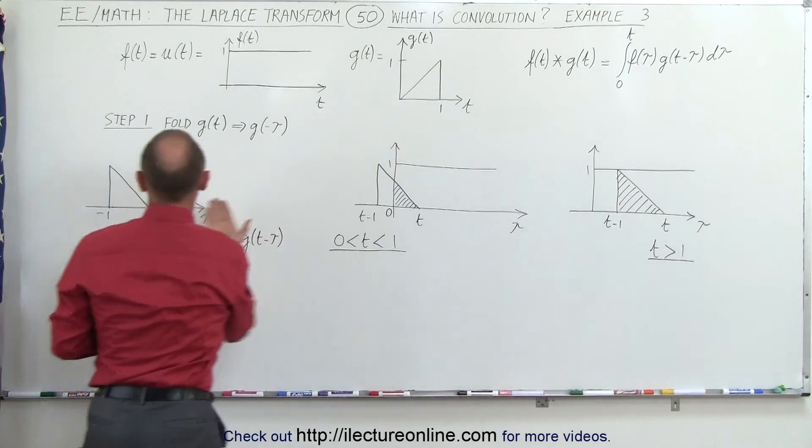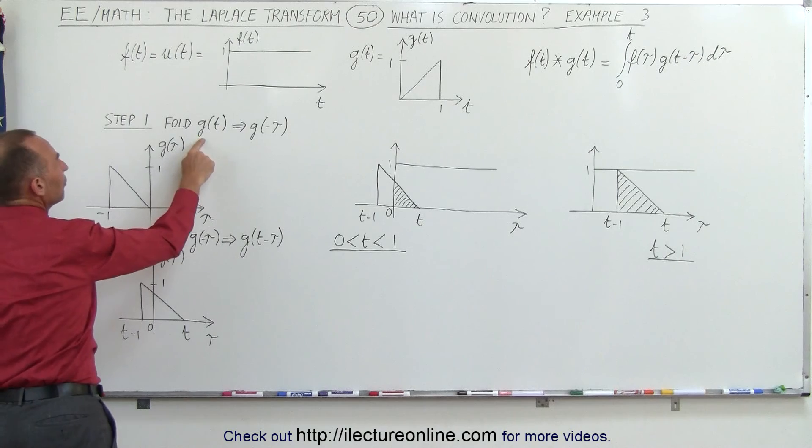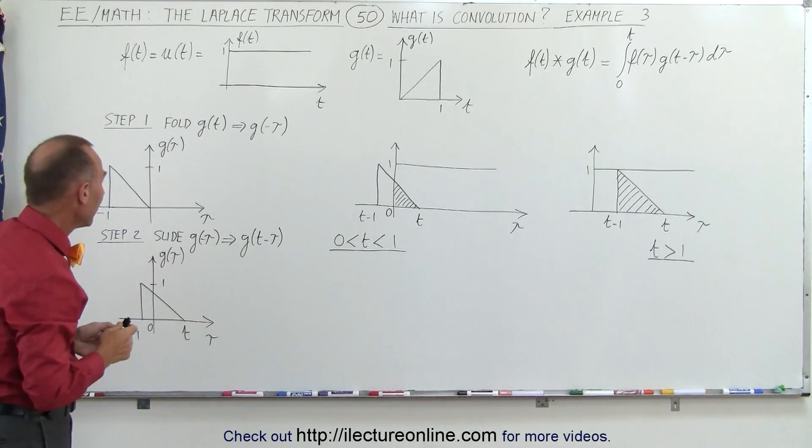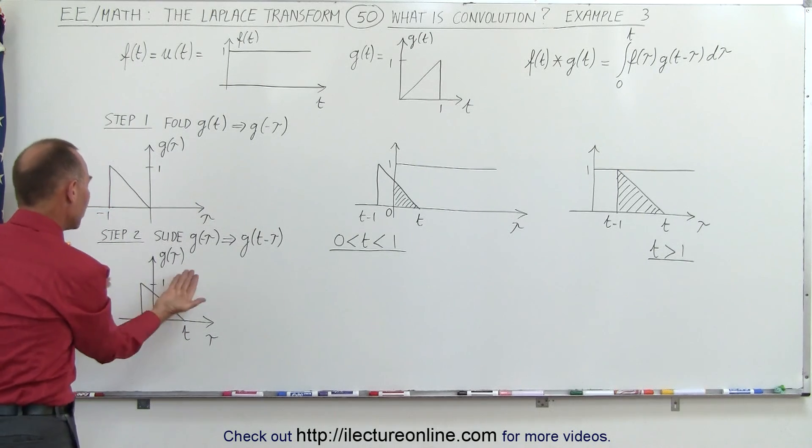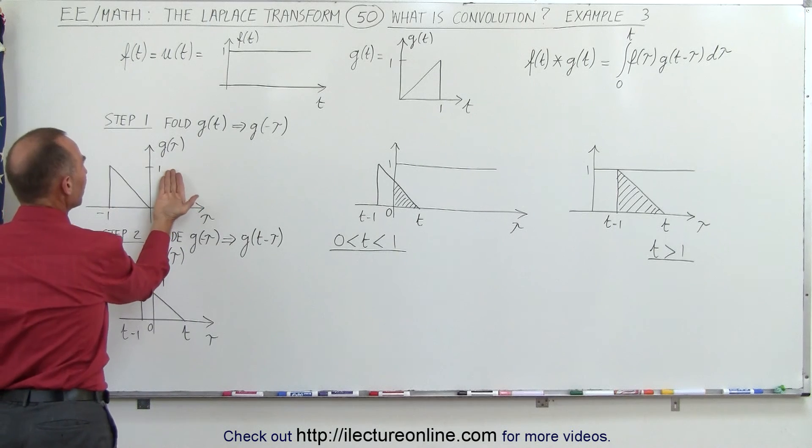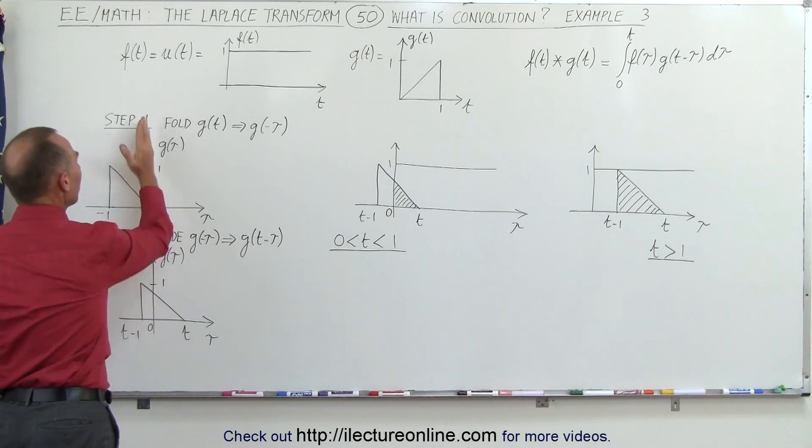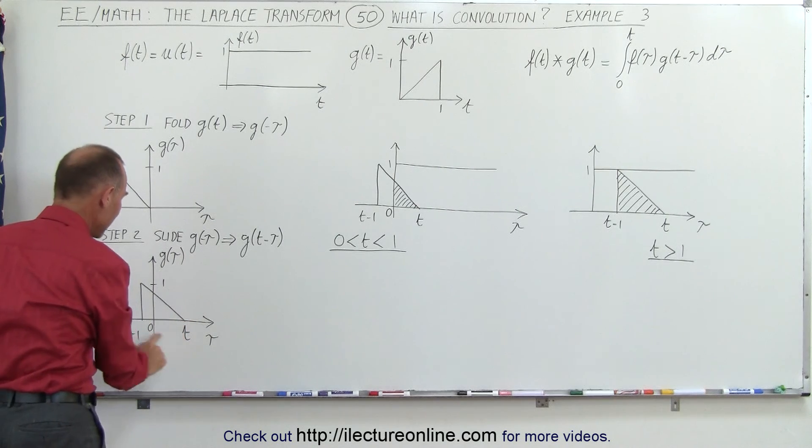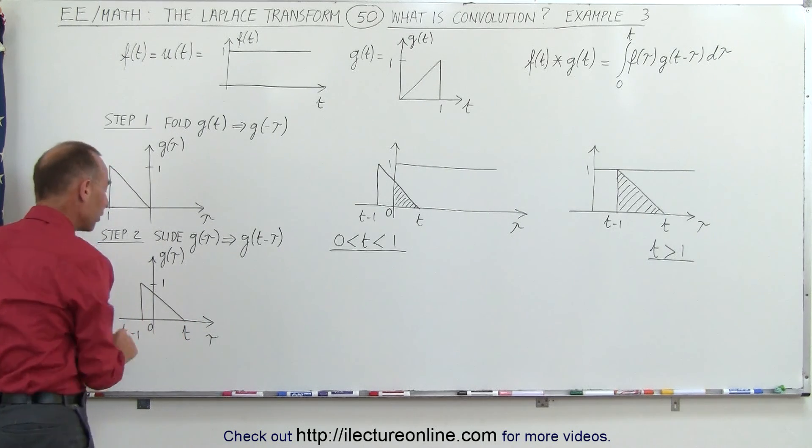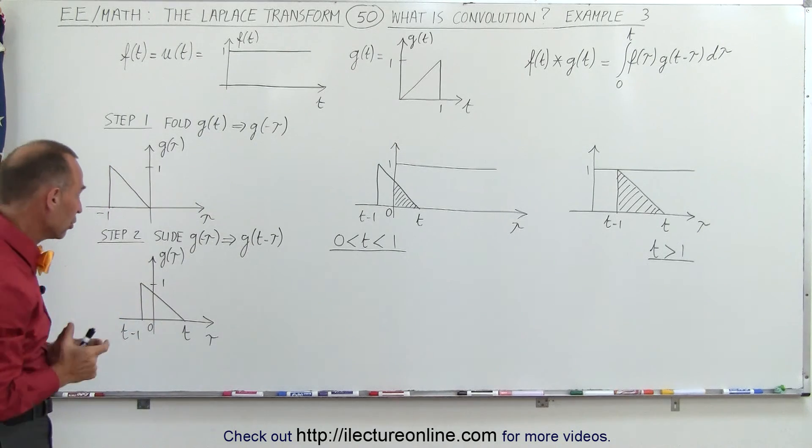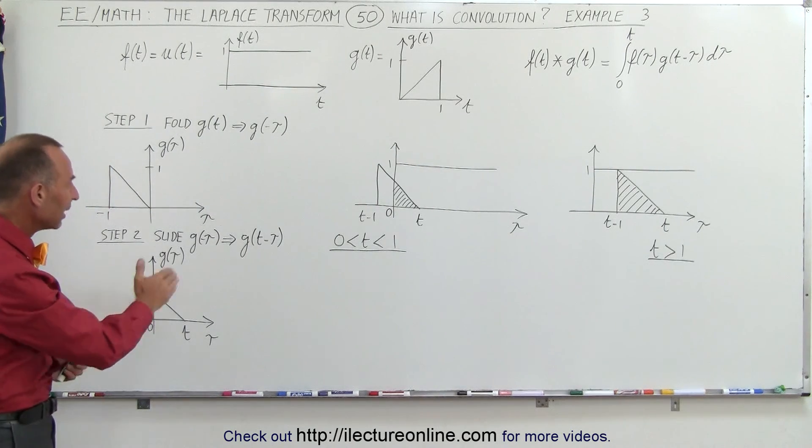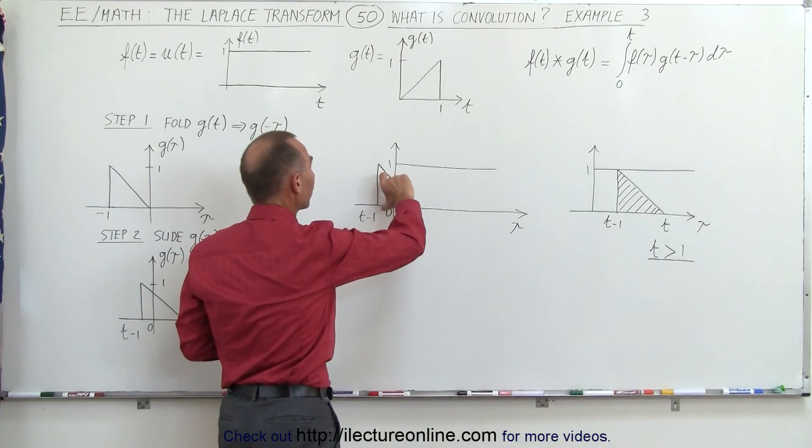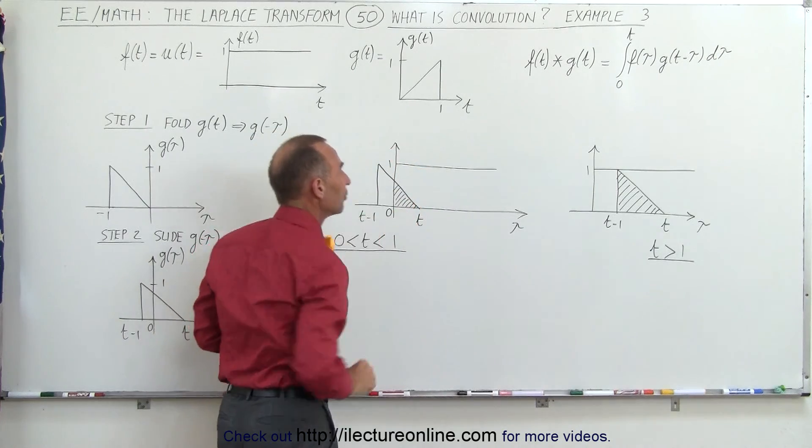So you're going to fold over g, so g of t becomes g of minus tau. We're now going to use a dummy variable for time tau. And then we begin to slide the wedge that we just folded over. Remember, folding simply means it's the mirror image about the vertical axis. Now we begin to slide in such a way that the front point is t and the back straight edge here is t minus 1. Remember, the wedge is only one unit wide at the bottom. So now we begin to slide, and by definition, the convolution is equal to the height of the first function times the height of the second function times the amount of the overlap.